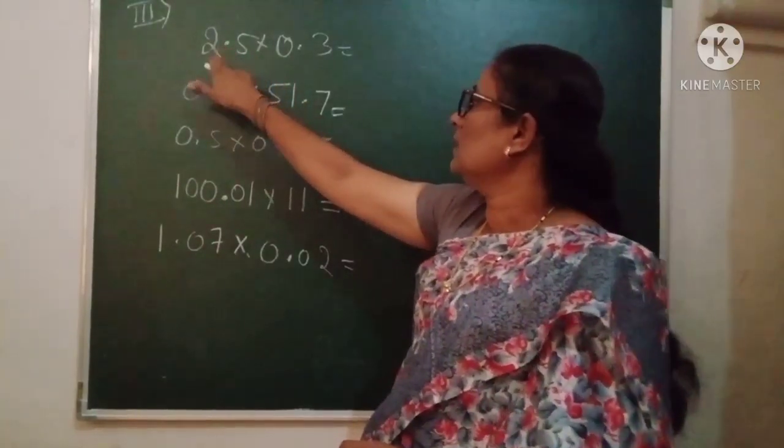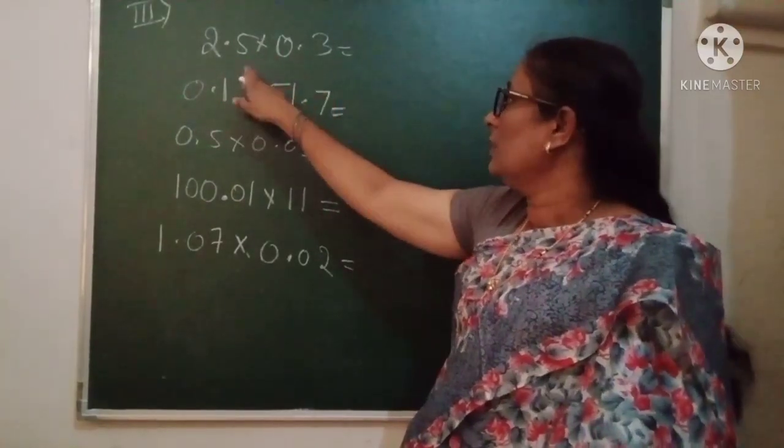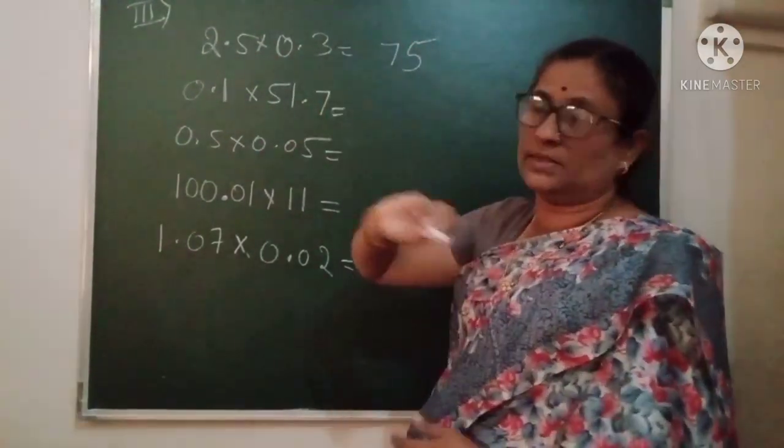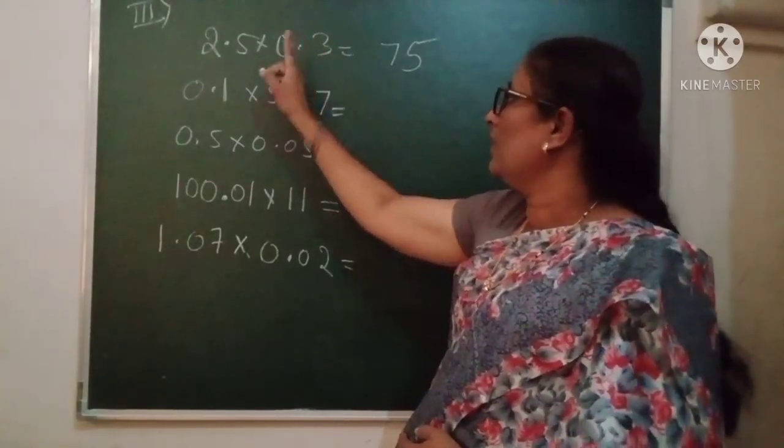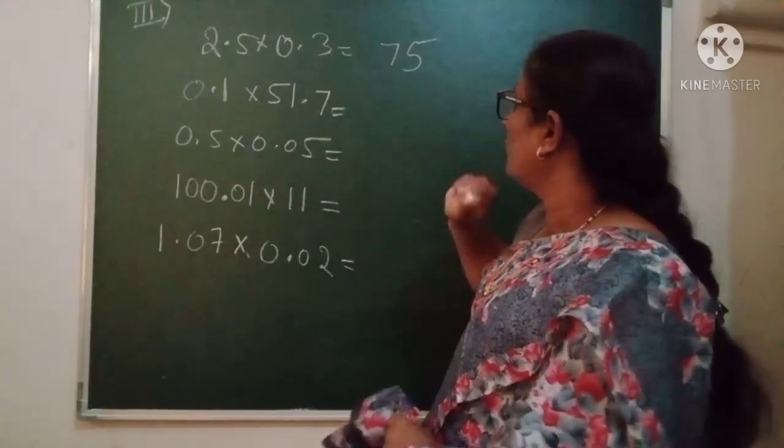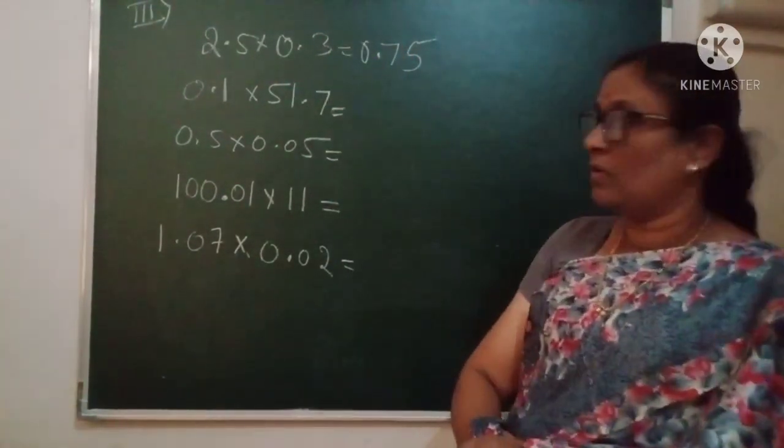First, before moving to that, consider the numbers. While multiplying 2.5 × 0.3, don't consider them as decimals. 2, 5, 3 gives us 75. Now we go with the decimal points. After decimal point, in both numbers, we have one digit each. So this is 0.75.